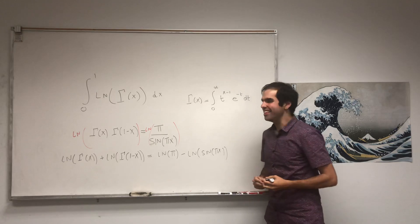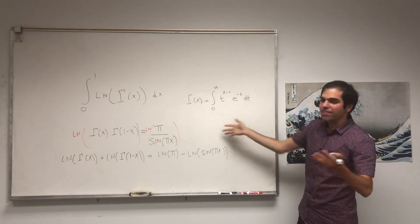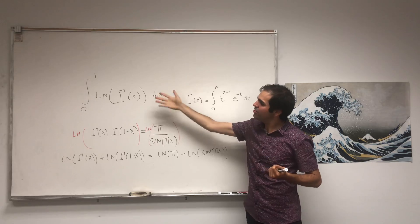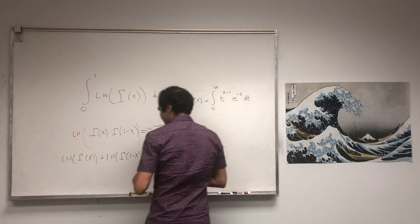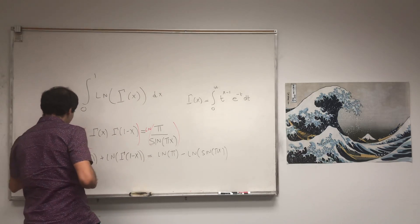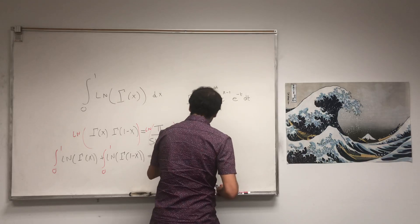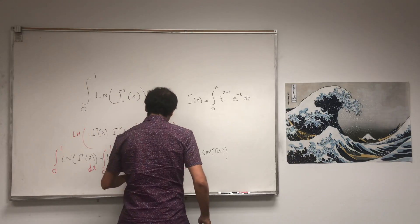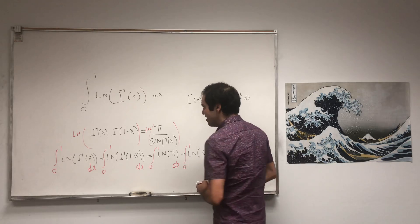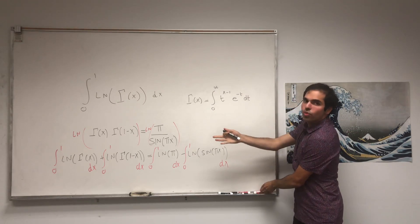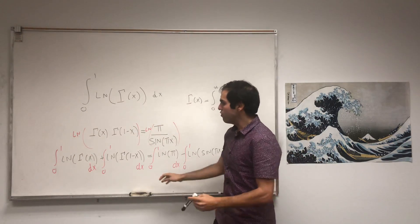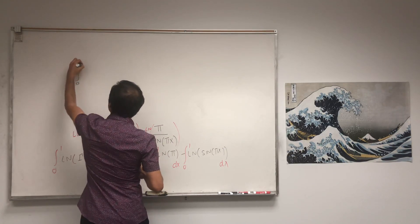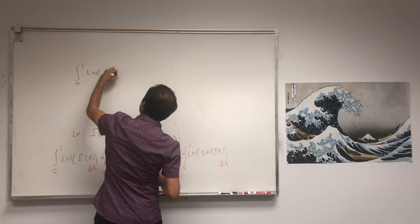That equals ln of pi minus ln of sine of pi x. And here's a cool thing — we have this very complicated formula, but we're just going to simplify it. So we integrate this from 0 to 1. The left-hand side is what we want — this first term, the integral from 0 to 1 of ln of gamma of x dx.